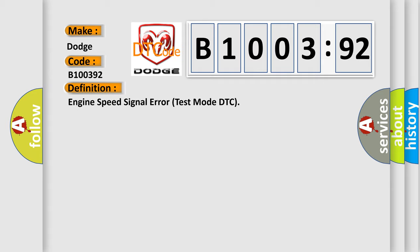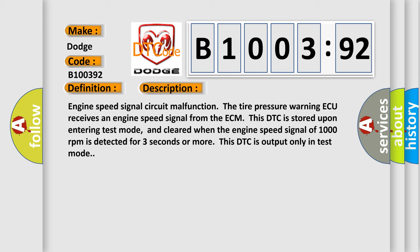And now this is a short description of this DTC code. Engine speed signal circuit malfunction. The tire pressure warning ECU receives an engine speed signal from the ECM. This DTC is stored upon entering test mode and cleared when the engine speed signal of 1000 revolutions per minute is detected for three seconds or more. This DTC is output only in test mode.